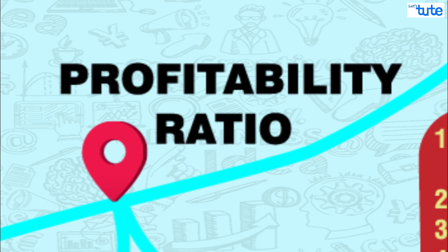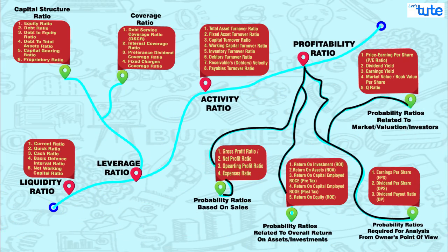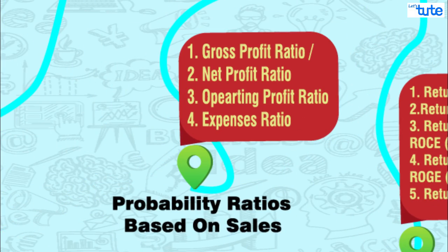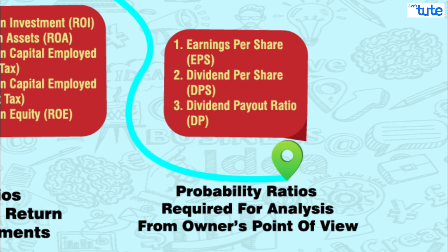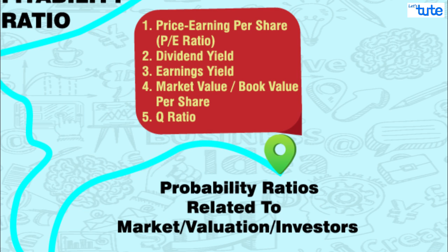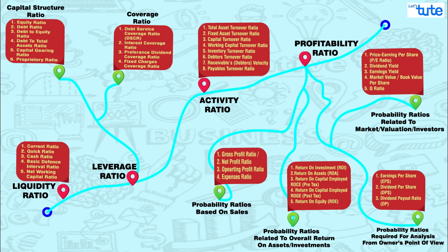The profitability ratios are broadly classified into four categories: related to sales, related to overall return on investments, profitability ratios required for analysis from the owner's point of view, and profitability ratios related to market, valuation, or investors. So these are the broad classifications of ratios.